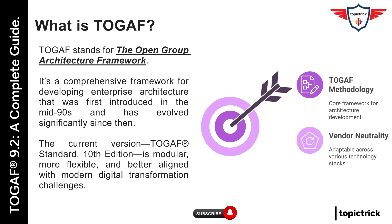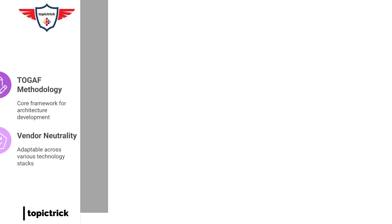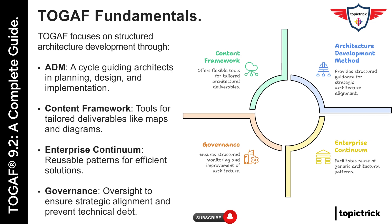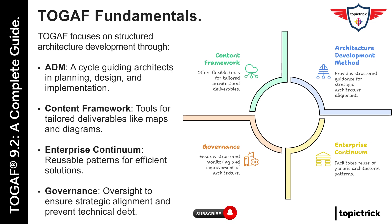One of the central parts of TOGAF is the ADM, the Architecture Development Method. This is a step-by-step cycle that guides architects through understanding the business, designing the architecture, transitioning into implementation, and managing change. The ADM includes phases like preliminary, architecture vision, business architecture, information systems architecture, technology architecture, and so on. It's like a map that ensures you don't jump from idea to execution without understanding the terrain.